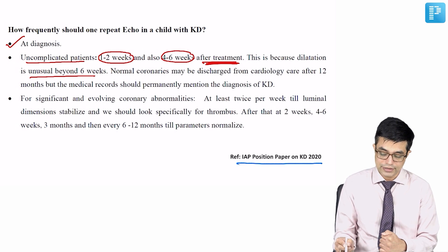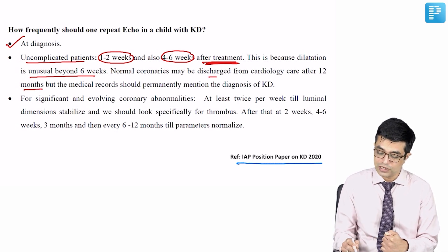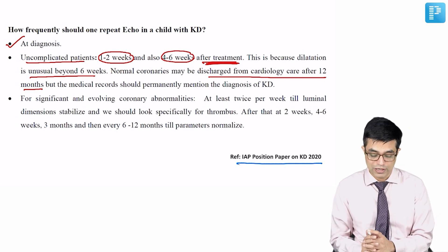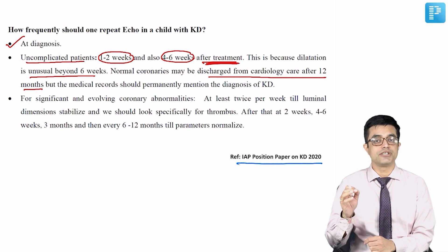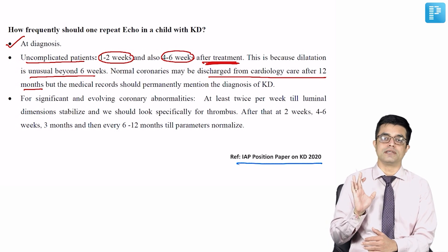If there are normal coronary arteries, they can be discharged from cardiology care after 12 months. It does not mean the patient is admitted in hospital for 12 months—it means the patient does not require further cardiology follow-up after 1 year.